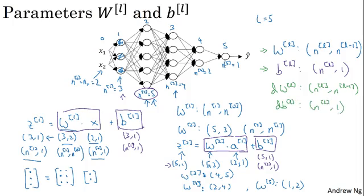Now the other key set of quantities whose dimensions to check are these z, x, as well as a of l. Because z of l is equal to g of a of l applied element-wise, then z and a should have the same dimension in these types of networks.